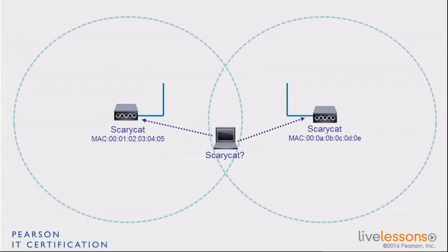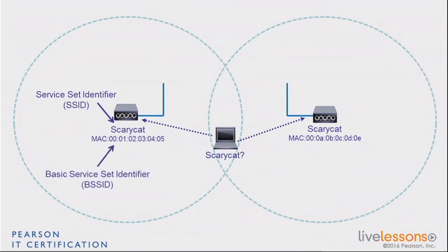The MAC address associated to the SSID name is called the BSSID. The SSID alone is just the name. The Basic Service Set Identifier, or BSSID, is the MAC address associated to the SSID. If you remember that the access point has a BSA and serves a BSS, that helps you remember that the B thing is associated to every single access point. So SSID is common to everyone, but BSSID identifies a unique access point for that SSID.